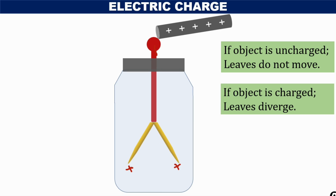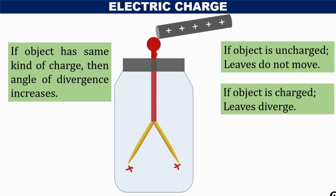That means if the object is charged, the gold leaves diverge. We can also use a pre-charged electroscope. If we assume the electroscope is already positively charged and we bring a positively charged object near the knob, the charge on the gold leaves increases. Therefore, there will be an increase in the force of repulsion, and hence an increase in the angle of divergence.